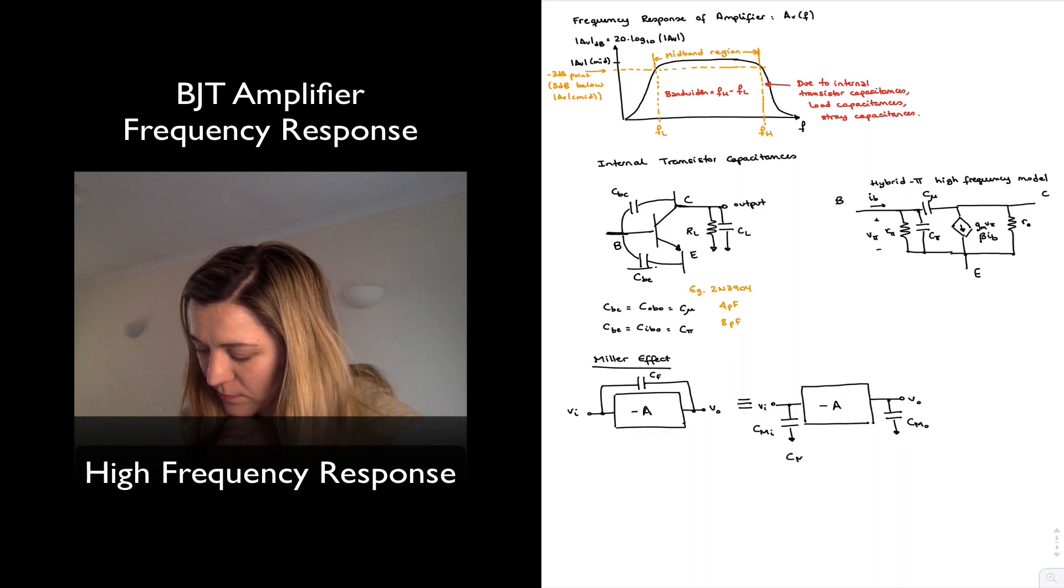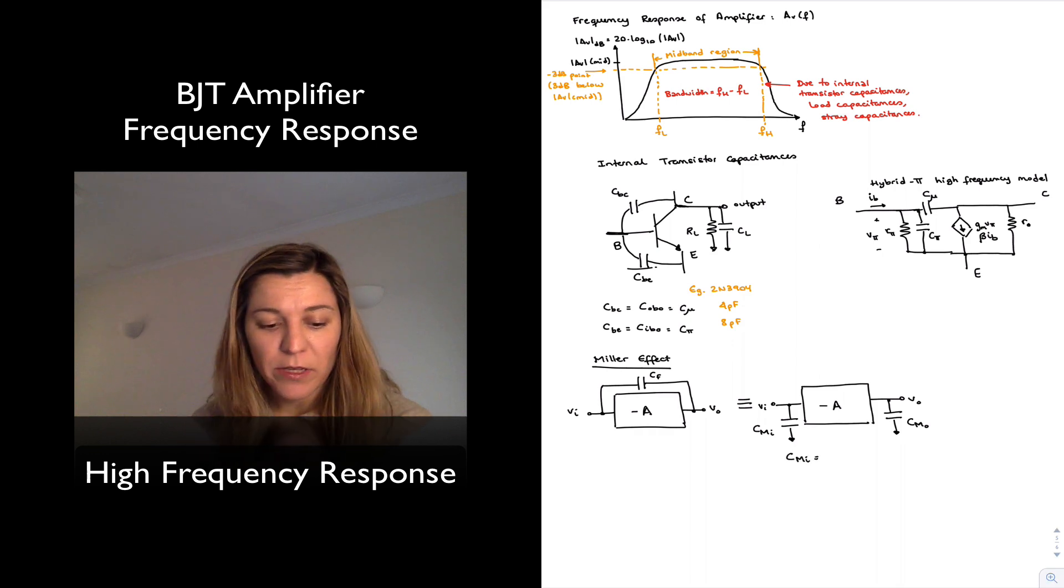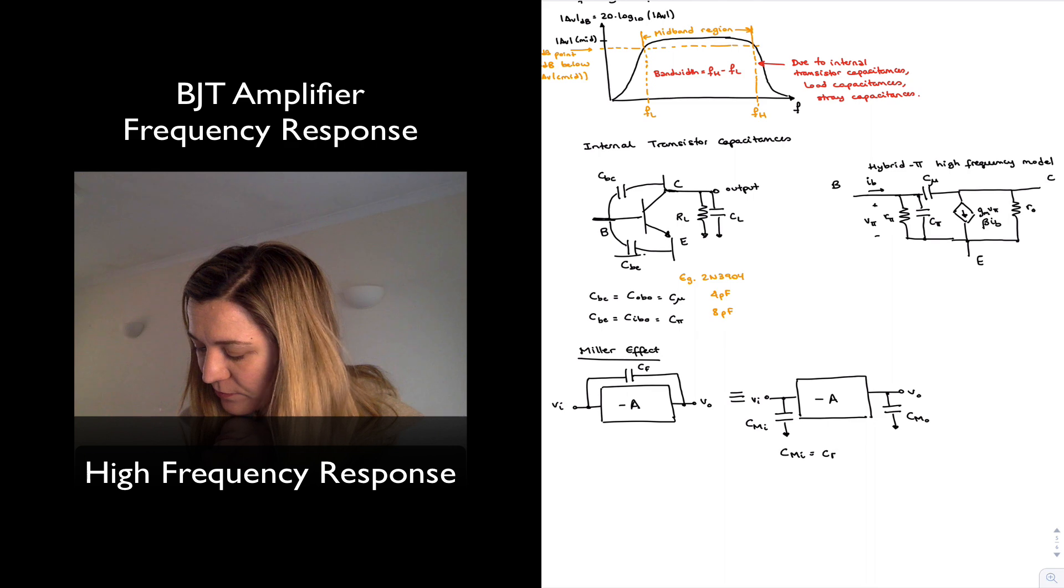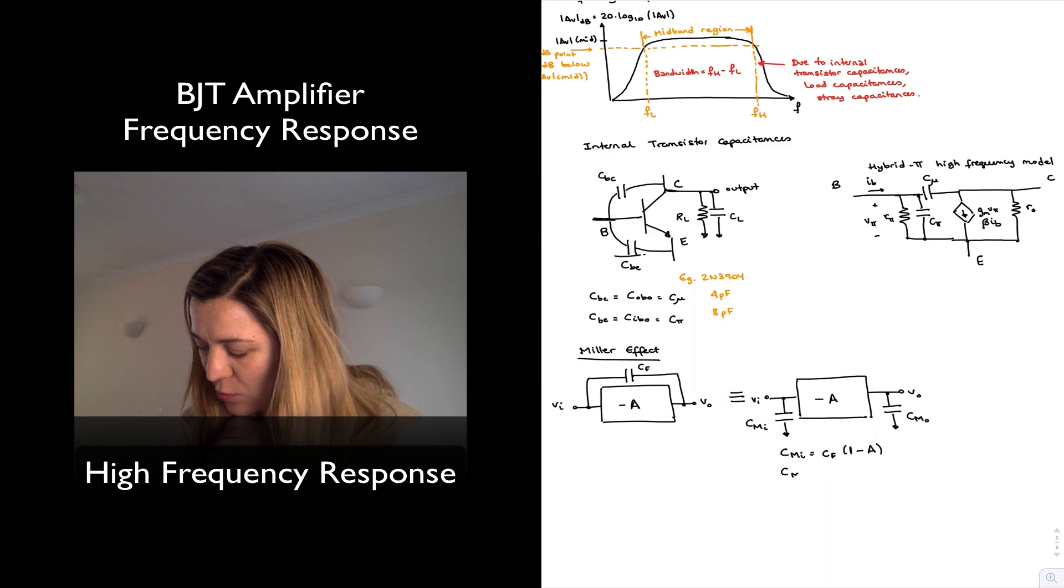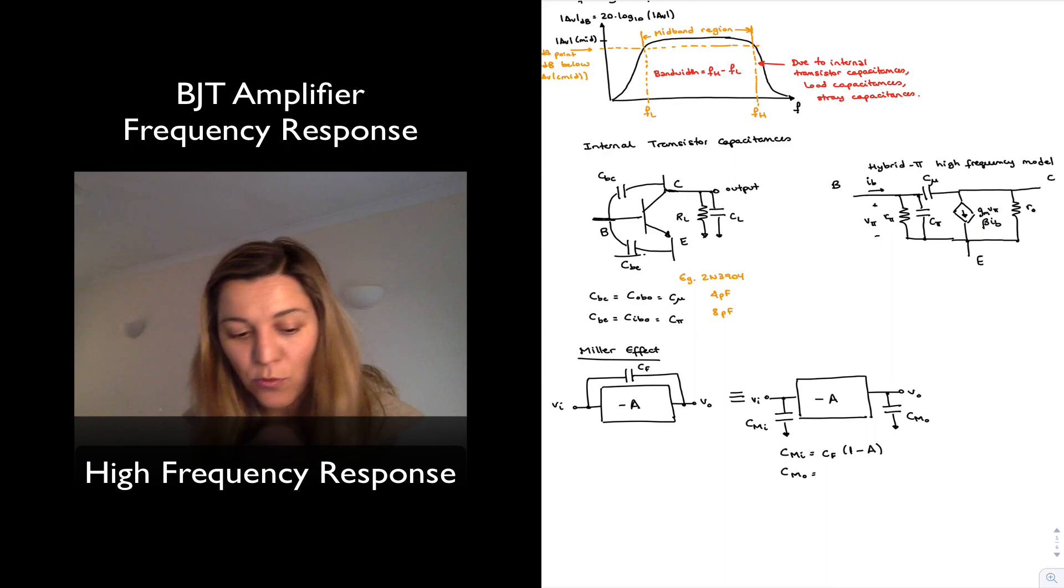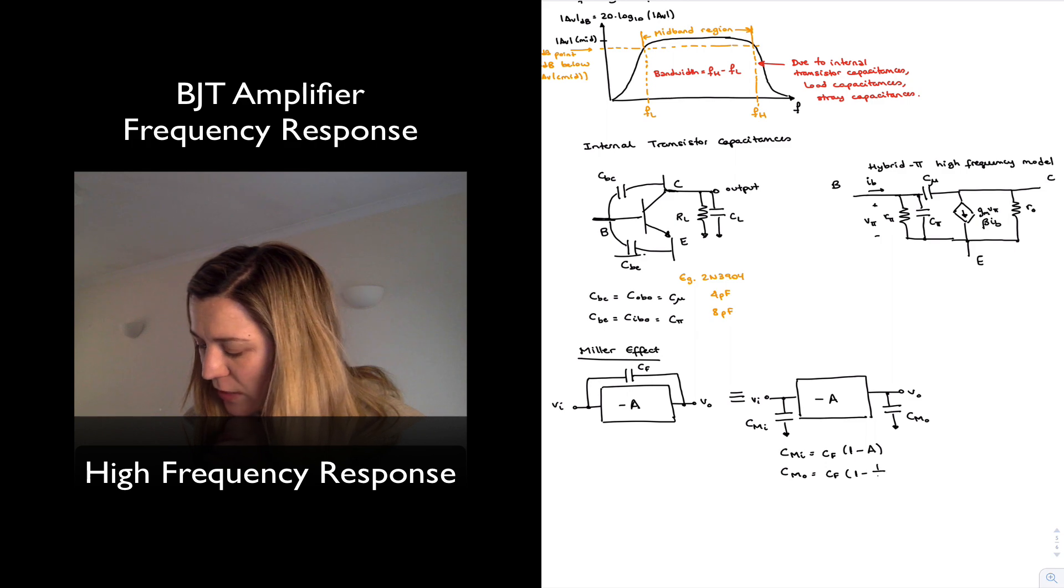Cmiller input will be equal to Cf times 1 minus 1 over A.